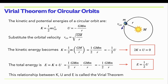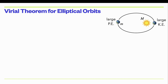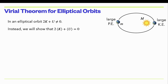Let's now look at the Virial Theorem for elliptical orbits. As a planet goes around in an elliptical orbit, the distance from the sun changes. When the planet is farthest from the sun, it gains gravitational potential energy, and when it falls back in, it loses potential energy and picks up kinetic energy. So instantaneously at any given moment, 2K + U can't be zero because the ratio of potential to kinetic energy is constantly changing. However, if you take the time average of the kinetic and potential energies, you do recover the form of the Virial Theorem.